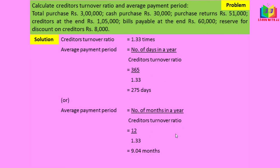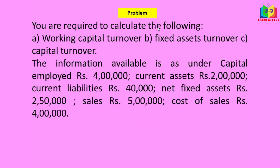Now we'll see one more problem. Calculate the working capital turnover, fixed asset turnover, and capital turnover ratios. The information given is: capital employed 4 lakh, current assets 2 lakh, current liabilities 40,000, net fixed assets 2 lakh 50,000, sales 5 lakh, cost of sales 4 lakh. Everything is given directly, so we just substitute into the formulas.